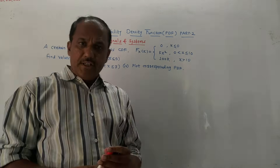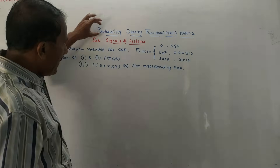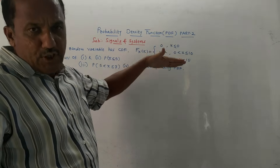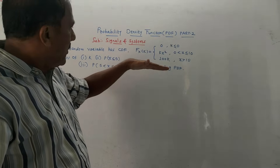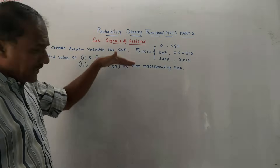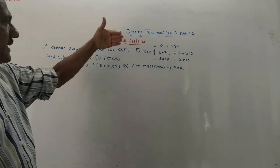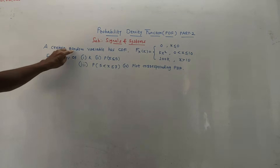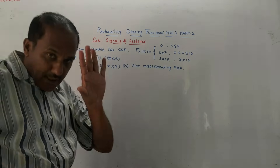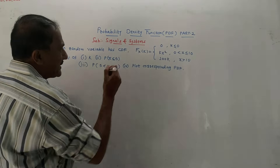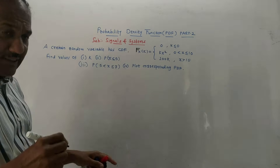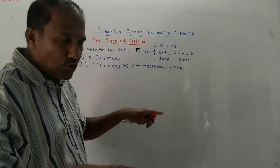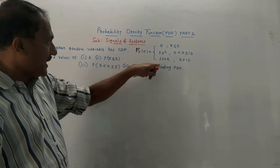Hello and welcome, dear students. This topic is Probability Density Function, that is PDF, Part 2. Earlier I covered Part 1 in which we solved numericals related to a given PDF. Now different types of numericals will be solved in which CDF will be given and it is asked to calculate different quantities. CDF is denoted by capital F, PDF is denoted by small f.